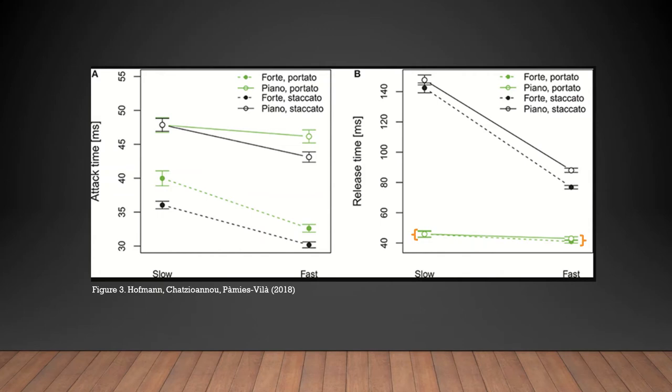The same analysis for the release time for portato articulation can be observed on graph B. This graph shows no significant effect of tempo on release transients for portato articulation. This means that the attack time for portato articulation is related to both tempo and dynamic, but the release time is not related to either. Conversely, the staccato articulation in graph B in black shows that the staccato release time is affected by tempo.